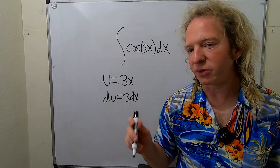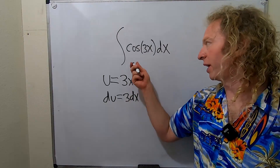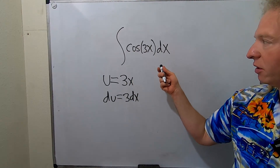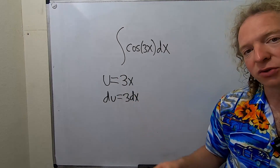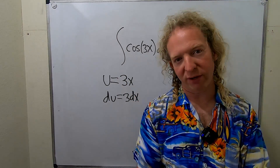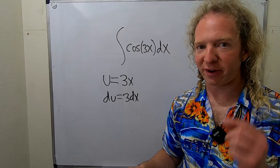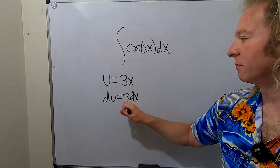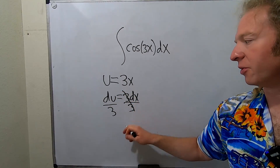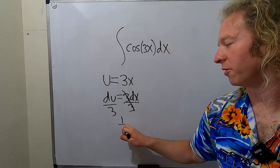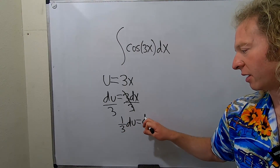So now the goal is always to make whatever you get here look like whatever is here. Here there is no 3, but here there is a 3, so we have to get rid of the 3. Since it's being multiplied by 3, we'll divide by 3. These cancel, so we get 1/3 du equals dx.